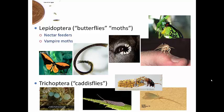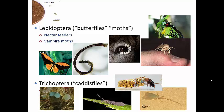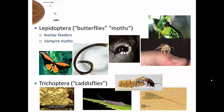The larval stages are found in lakes, rivers, and streams, and they are very important components of the food web. A few members in New Zealand and Australia have larvae adapted to marine environments, actually living in tidal pools — which is remarkable, as very few insects are adapted to salt water.